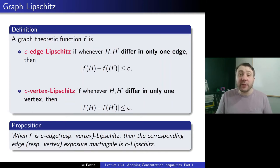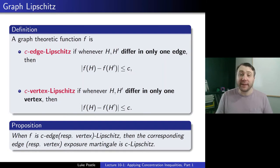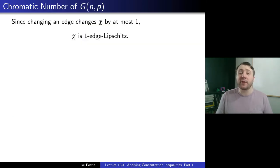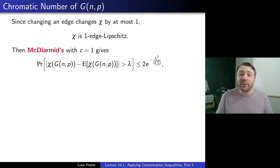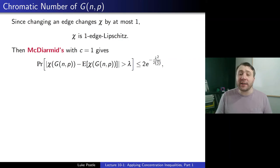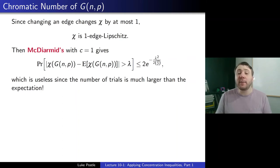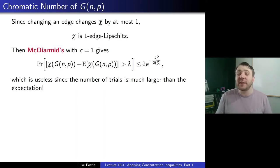We can apply Azuma's or McDiarmid's to those martingales. Since changing an edge changes the chromatic number by at most one, χ is 1-edge Lipschitz. If you apply McDiarmid's with c = 1, you get the probability that χ is far from its expectation is at most 2e^{−λ²/2}, but with n-choose-2 trials — one for each edge. This is actually useless, since the number of trials is much larger than the expectation, and it doesn't really give any concentration.